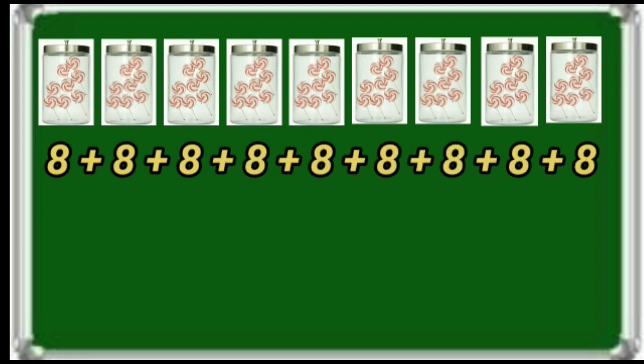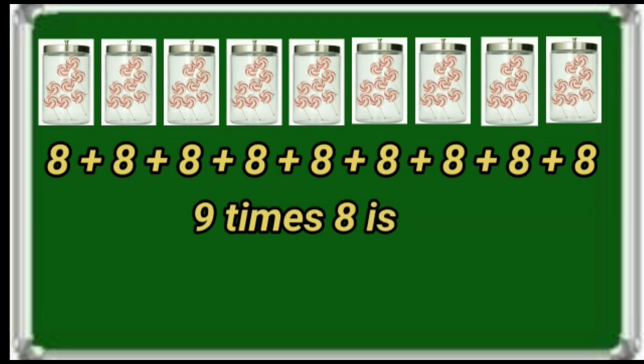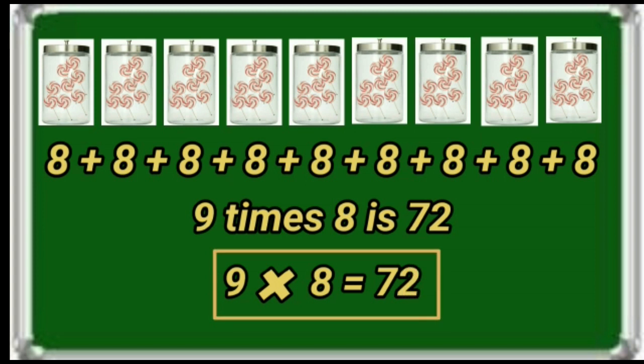Very good. Later he arranged 8 lollies in each jar. Say children — how many jars are there? Yes, 9 jars. That means 8 is repeating 9 times. So total how many lollies are there? 72 lollies. 9 times 8 is 72. That can be written as 9 8's = 72.